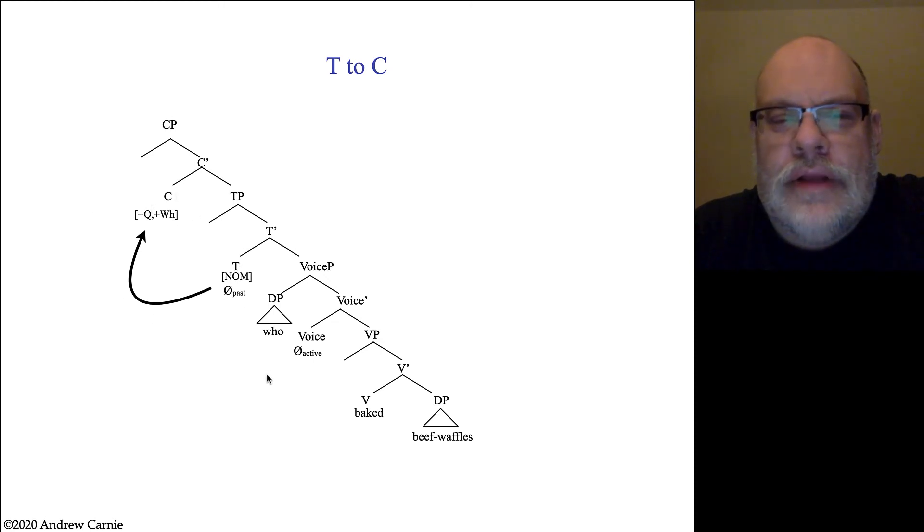But we would normally do T to C movement when we have a plus Q. So I'm doing it here, but I'm moving a null element into another null element. So that has no effect on the surface order of elements because both of these are null and you're not going to hear them anyways. But doing that allows us to check off the Q feature.